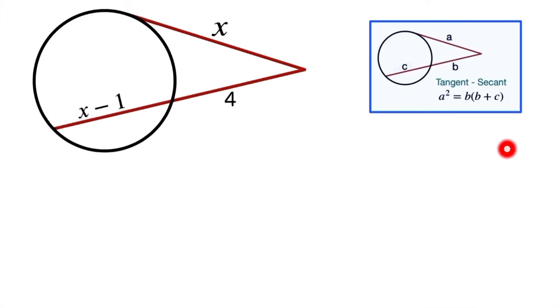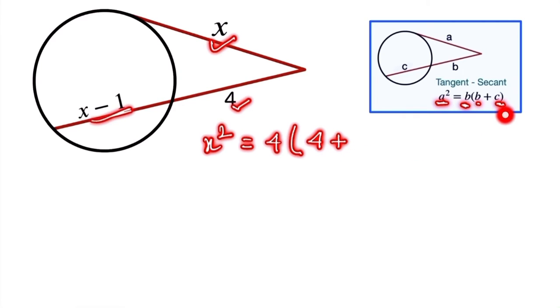The square of the tangent length equals b times the sum of b plus c. Substituting the values: x² equals 4 times (4 plus x minus 1).